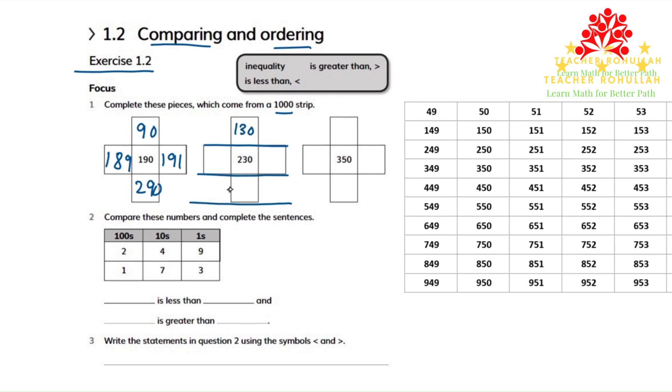Under the row of 200s we have the row of 300s, so it will be 330. To the left of 230 we will have 229, and to the right of it we have 231.